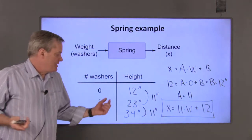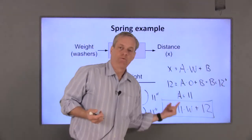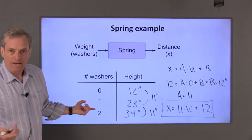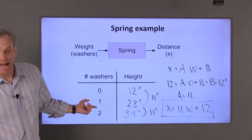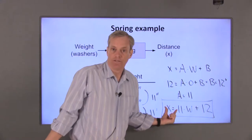Now I've got a mathematical relationship between X and the number of washers. This can be evaluated for any value of W. So if I have a weight attached to the spring that corresponds to one and a half washers, I can use this equation to decide what X should be.